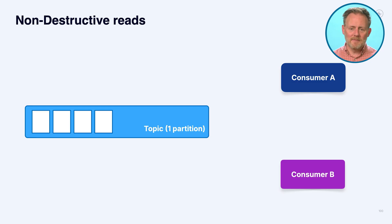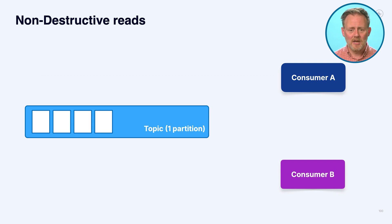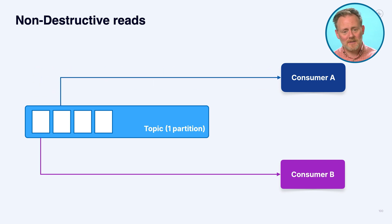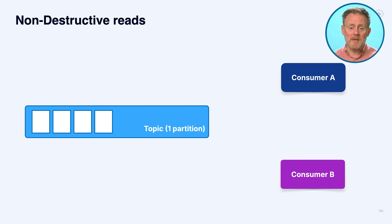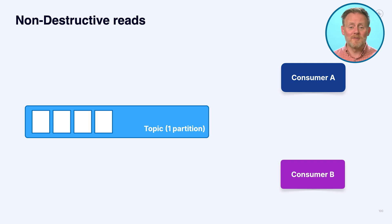There's a bigger story in consumers than just the network plumbing — they're a lot more interesting. As a reminder, Kafka is not a queue, it's a log. A topic is fundamentally a log, which means that the act of consuming doesn't make messages go away. We can have two independent consumers reading the same message. When consumer A reads it, consumer B can still come along and read it. However many consumers you have, they can all read those same messages.